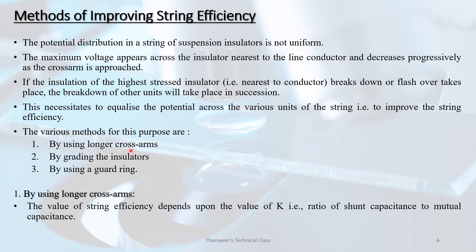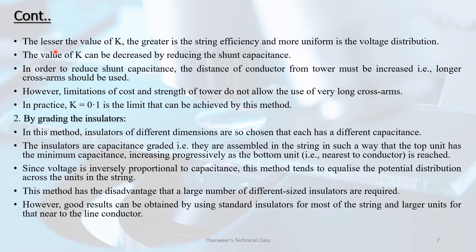Methods of improving string efficiency: By using longer cross-arms — the value of string efficiency depends upon the value of K, the ratio of shunt capacitance to mutual capacitance. The lesser the value of K, the greater is the string efficiency. The value of K can be decreased by reducing the shunt capacitance by increasing the distance of the conductor from the tower, i.e., using longer cross-arms. In practice, K equal to 0.1 is the limit achievable by this method.